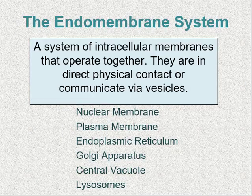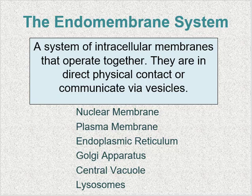The endomembrane system is a group of membranes and organelles within eukaryotic cells that work together to modify, package, and transport lipids and proteins. They stay in direct physical contact or communicate via vesicles. The organelles within this group consist of the nuclear membrane, the plasma membrane, the endoplasmic reticulum, Golgi apparatus, the central vacuole, and lysosomes.